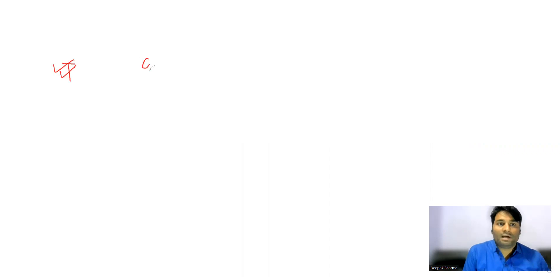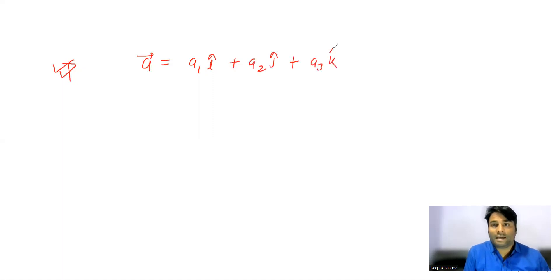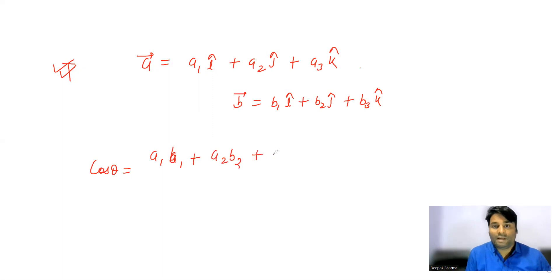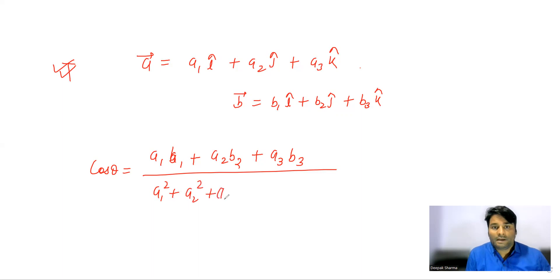Now let me generalize this formula. Suppose we have vector a = a1 i cap + a2 j cap + a3 k cap, and vector b = b1 i cap + b2 j cap + b3 k cap. Then the angle is given by: a dot b equals a1*b1 + a2*b2 + a3*b3, divided by sqrt(a1² + a2² + a3²).